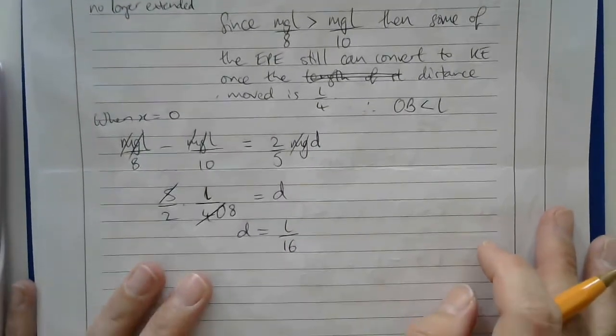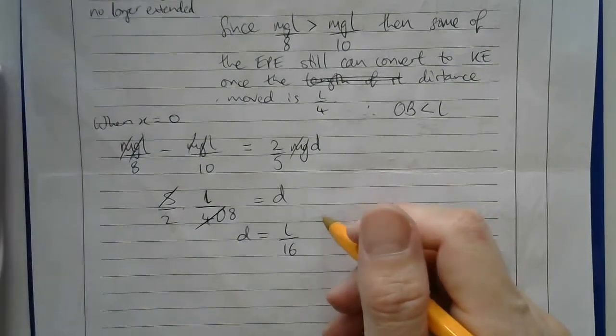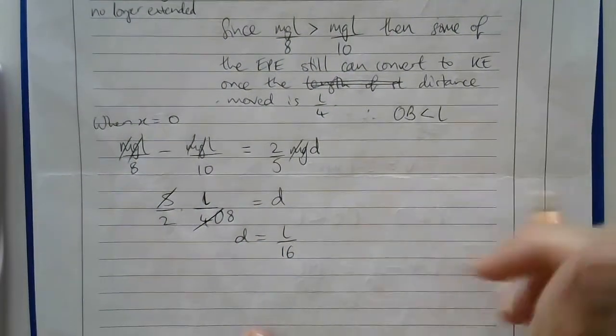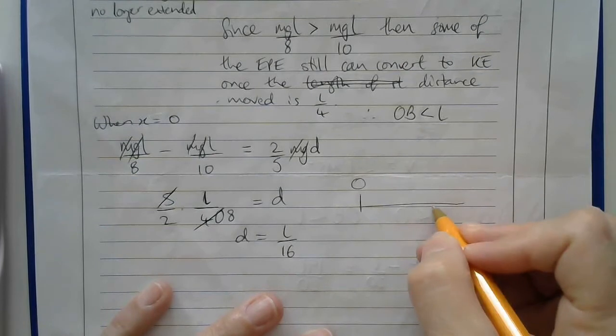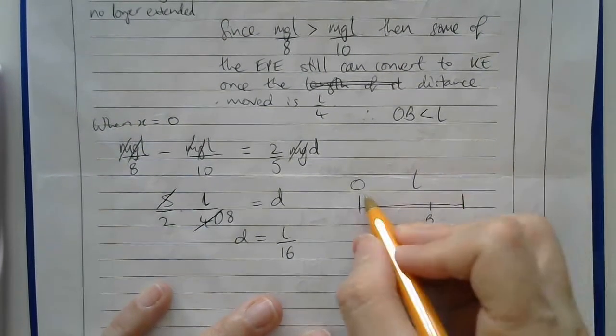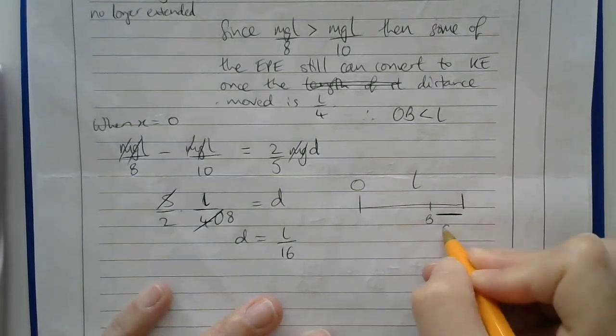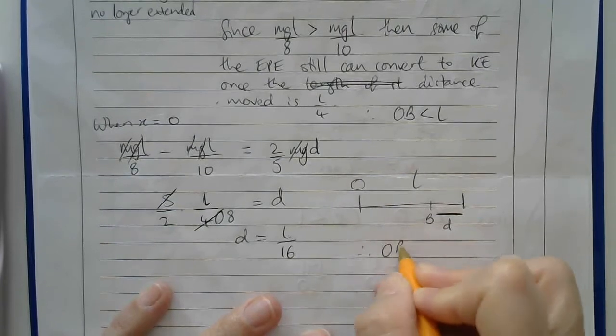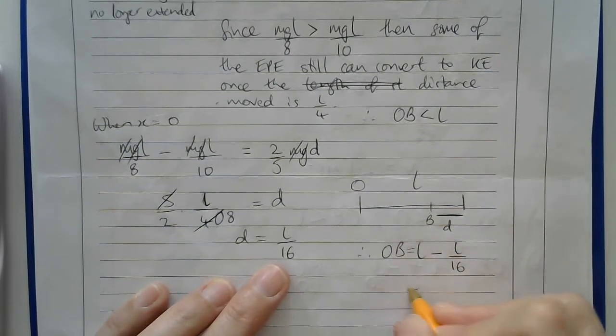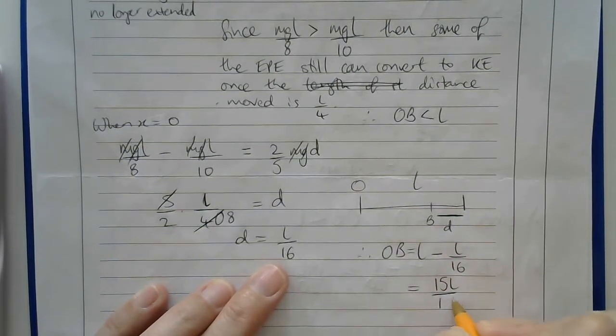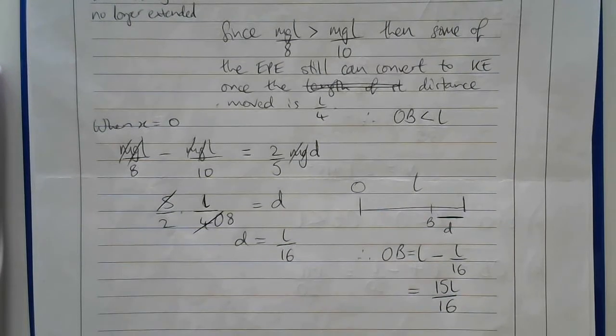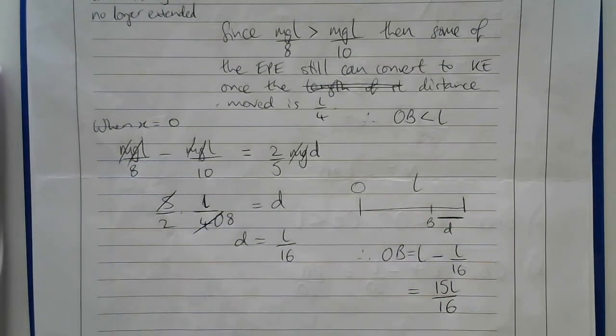That is the distance that it moved from when x is 0. What do they actually want? They want the distance OB. O is here, B is where it comes to stop. We were looking here, so that distance L from there to there. We just worked out this distance here, D, is L over 16. Therefore, OB is going to be L minus D, which will give me 15L over 16. I hope you found that solution helpful. Good luck with your studies.